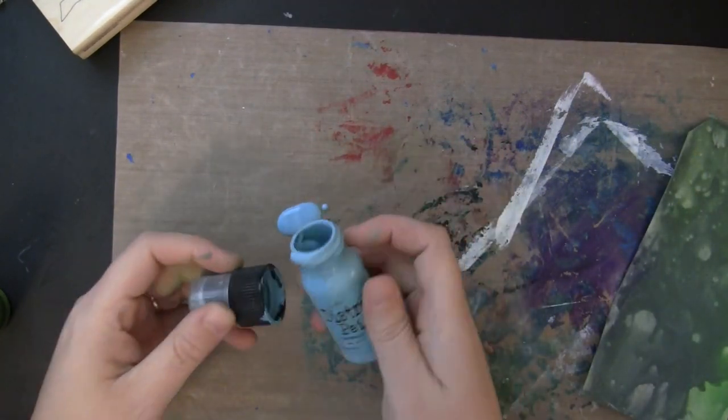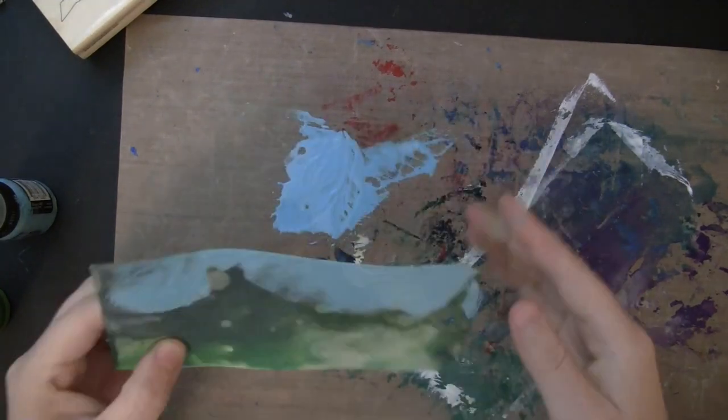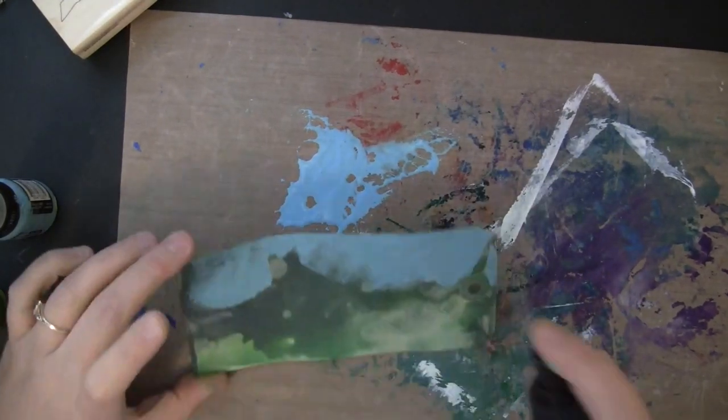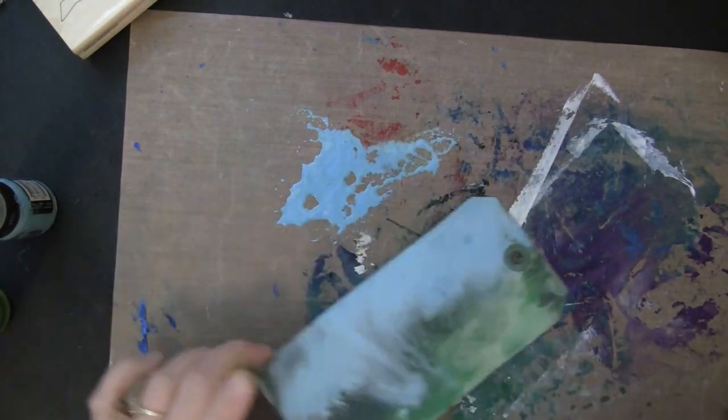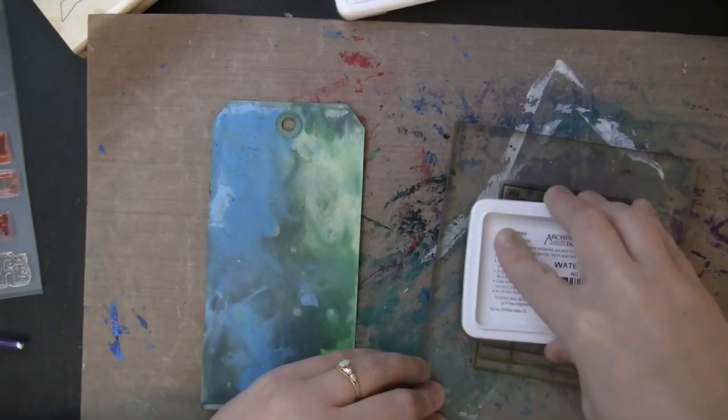And I went ahead and dried that, and I decided I wanted more of this Broken China color, so I'm just putting that on my craft mat. I just poured it on to save time. I pressed one side of the tag into that paint, and then spritzed it and allowed it to blend, and then I dried it before going on to my next step.